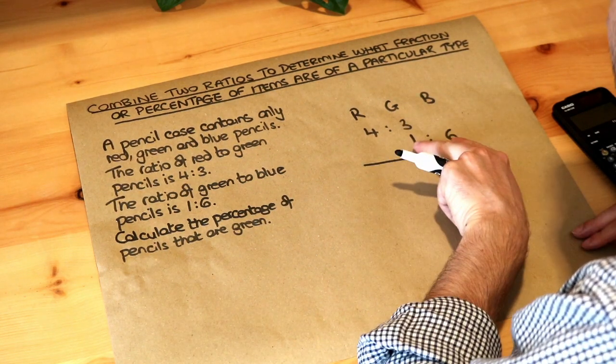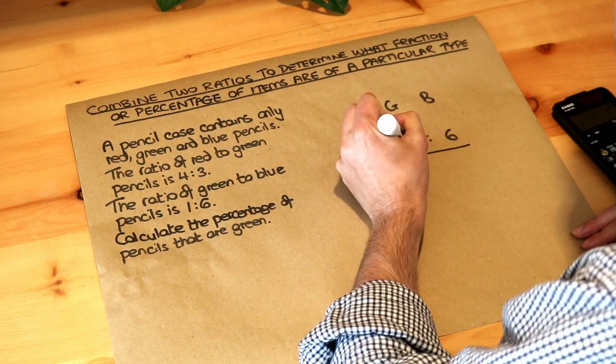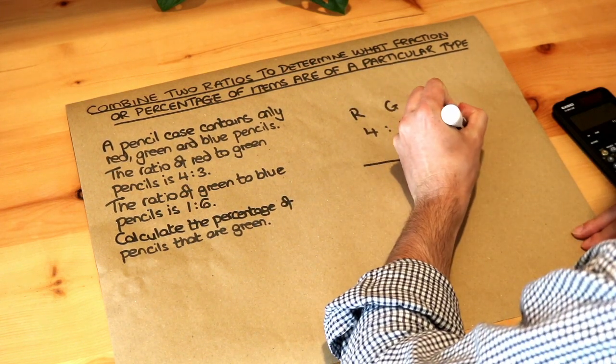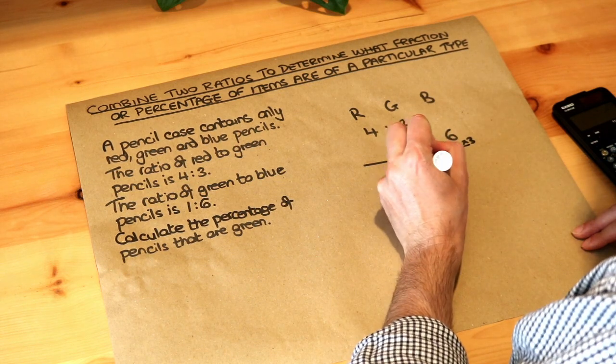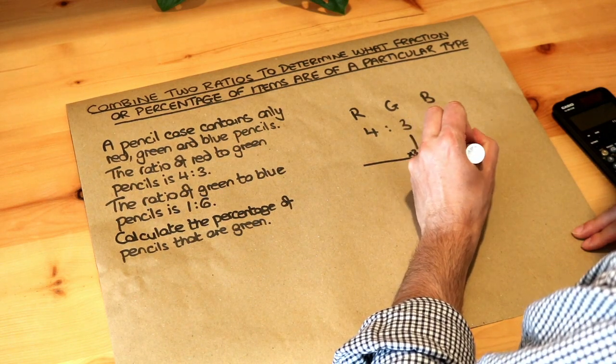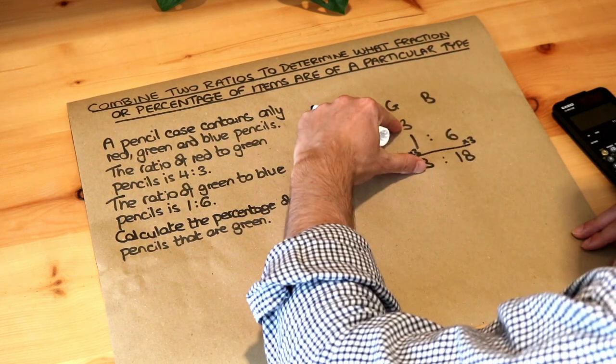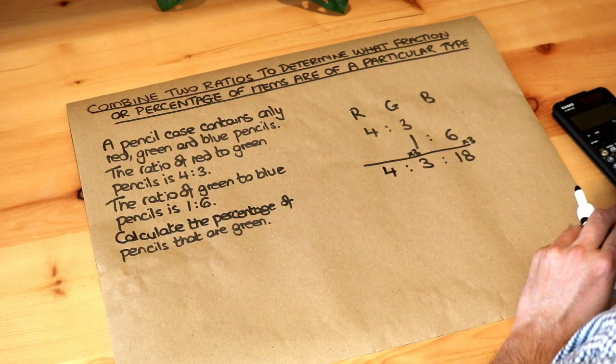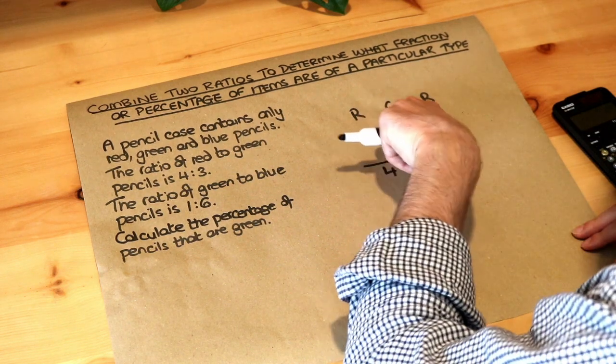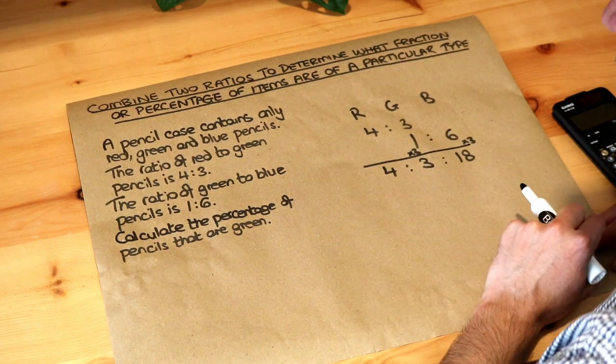So all we need to do is just multiply these two numbers by three. So times by three, times by three, and that then becomes three to 18. And now because we've got four to three, three to 18, these numbers are the same, so it's four to three to 18. That is red to green to blue all in one big ratio.